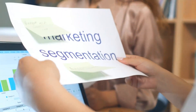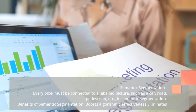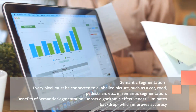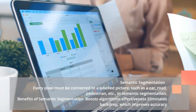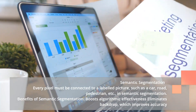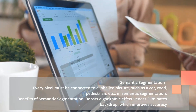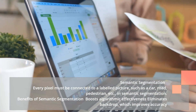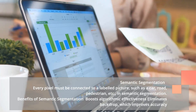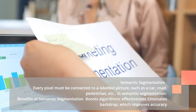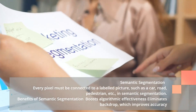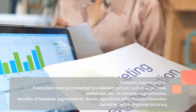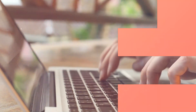In semantic segmentation, every pixel must be connected to a labeled class, such as car, road, pedestrian, etc. Benefits of semantic segmentation include boosting algorithmic effectiveness and eliminating backdrop, which improves accuracy.